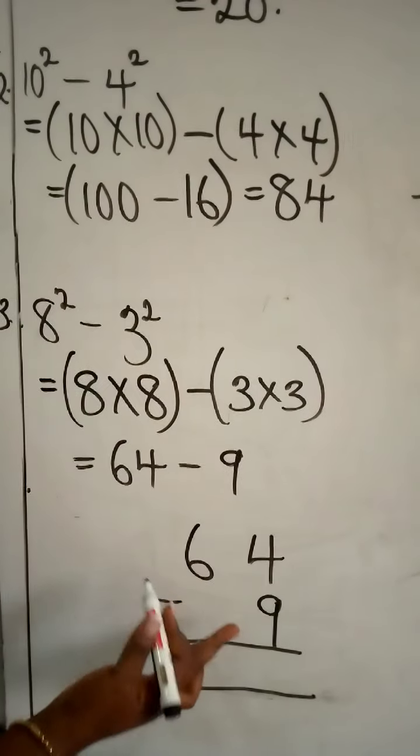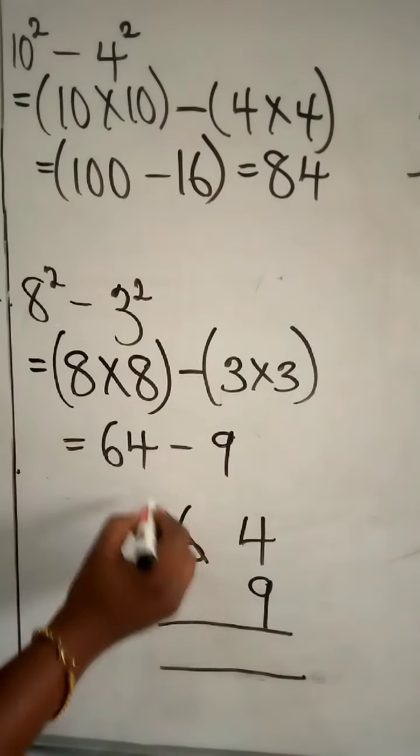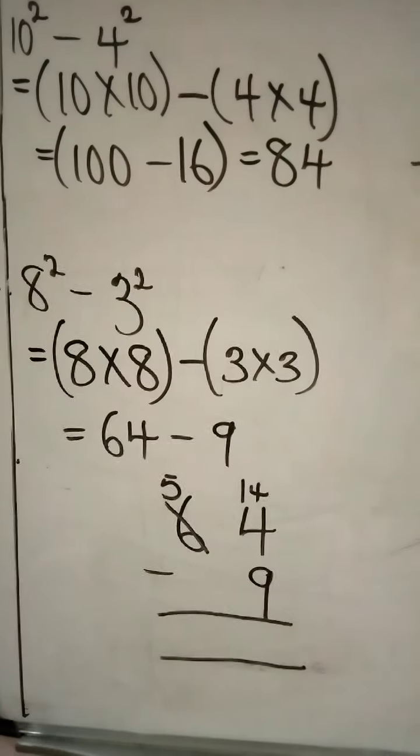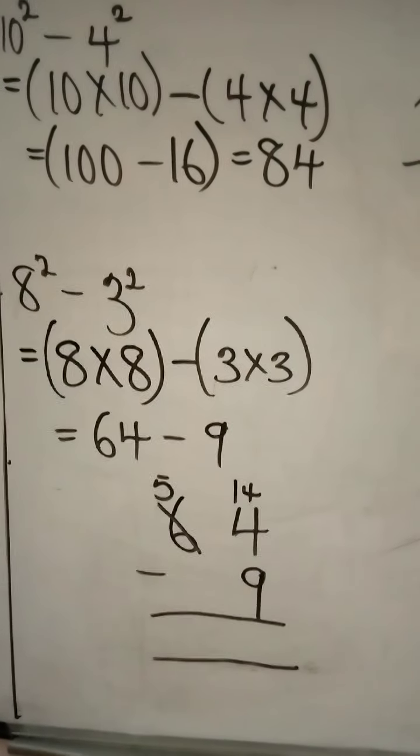4 cannot subtract 9. What do we do? We take out 1 from here. And this becomes 14. Now, 14 take away 9.